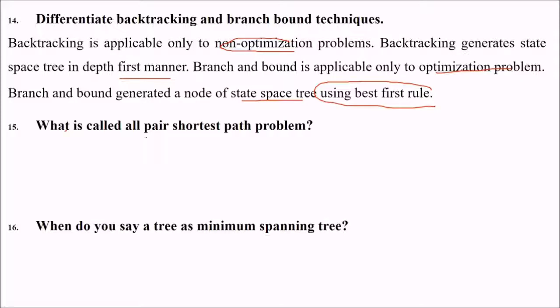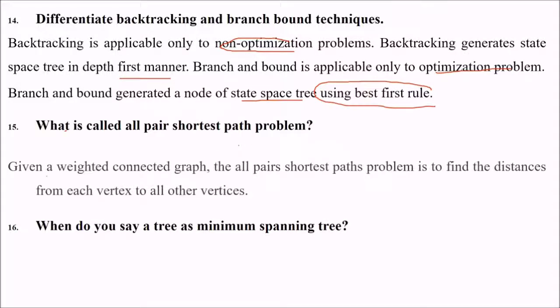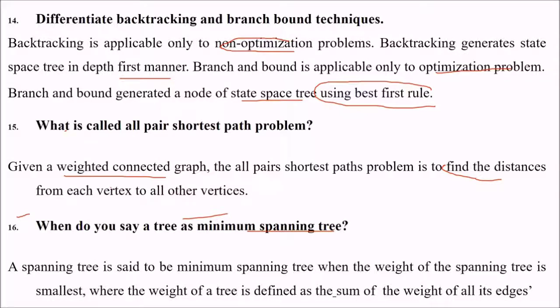What is all-pair shortest path problem? If you are provided a weighted connected graph, all-pair shortest path problem is to find the distances of each vertex to all other vertices. When do you say a tree is MS-tree? The spanning tree is said to be MS-tree when the weight of the spanning tree is smallest, where weight is defined as the sum of weights of all edges.